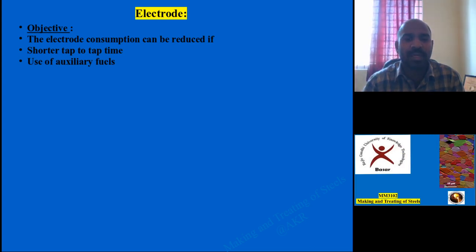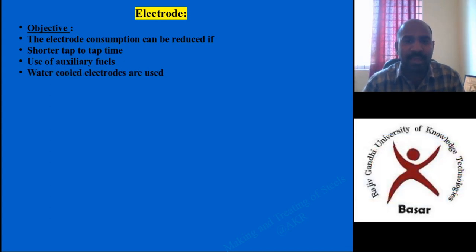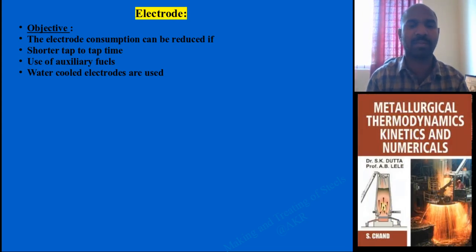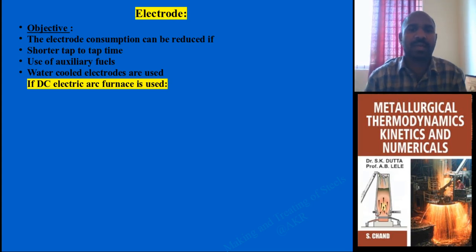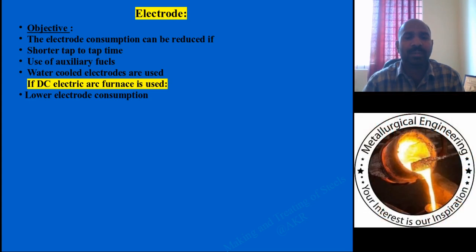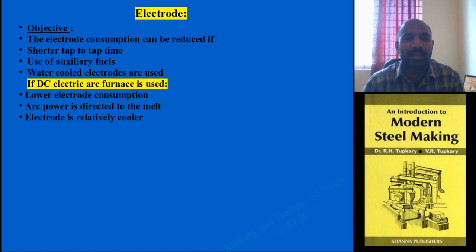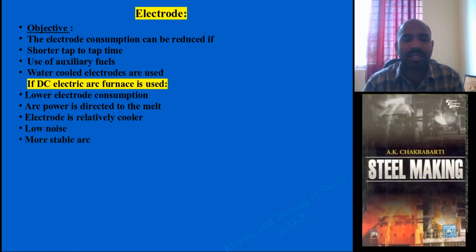If auxiliary fuels are used instead of electrical energy for arc generation, electrode consumption is saved. Water cooling provided for electrodes continuously also reduces electrode consumption. If a DC electric arc furnace is used, electrical consumption and electrode consumption are both lowered. Arc power is directed more efficiently to the melt. The electrode is relatively cooler compared to AC-based furnaces, noise is lower, and arc stability is greater than in AC furnace processes.